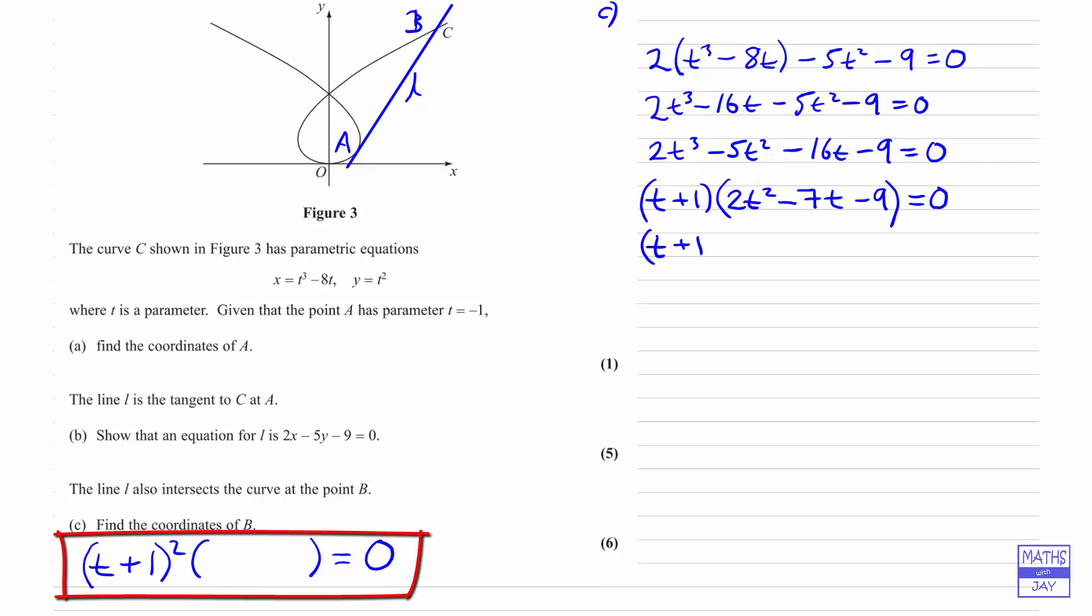Next, we know that we're going to have another T plus 1, so that makes it easier to factorize the quadratic, and we know we must have 2T there to multiply the T by. And then we've got to multiply the 1 by minus 9, and that should then mean that we get minus 9T plus 2T is minus 7T. Excellent.